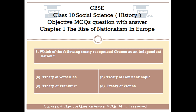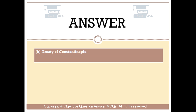Question number 8. Which of the following treaties recognized Greece as an independent nation? Option A: Treaty of Versailles. Option B: Treaty of Constantinople. Option C: Treaty of Frankfurt. Option D: Treaty of Vienna. The right answer is Option B — Treaty of Constantinople.